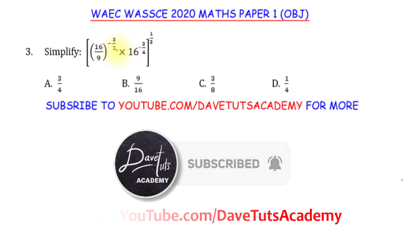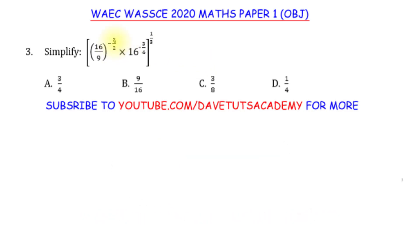If you notice, we are having a fractional power and also a negative power. The first rule that will help us is: if you have a number A raised to a negative power M, this is the same as 1 over A raised to power M.